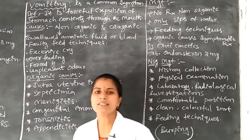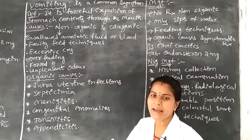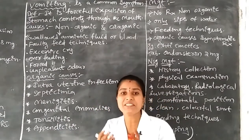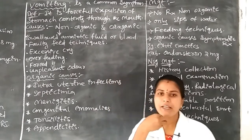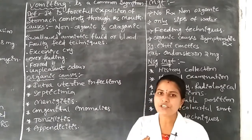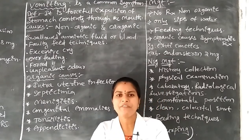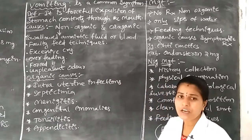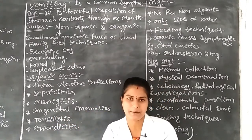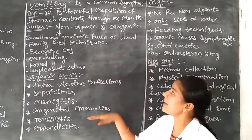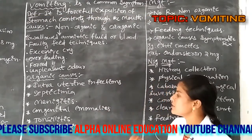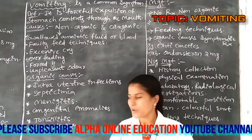Another organic cause is congenital anomalies — abnormalities present from birth. For example, stomach sphincters may not function sufficiently. Normally, the sphincter opens when feeding is given and closes after feeding to prevent backflow. If infants are born with sphincter problems, they may vomit. Congenital conditions like cleft lip and cleft palate also cause vomiting symptoms.